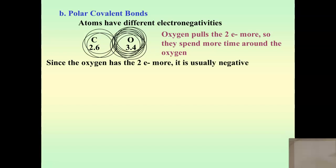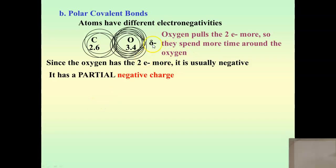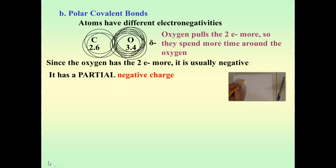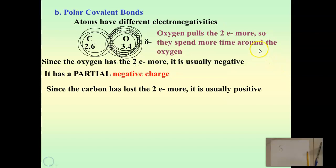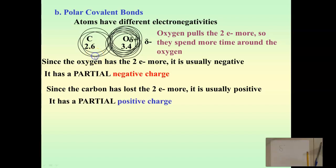Since the oxygen has the two electrons more often, it's usually negative. Every time the electrons spend time around the oxygen, it has an extra electron — it's negative — and the carbon is missing an electron, so it's positive. But since it doesn't have the electron all the time, we can't say it has a full negative charge — we say it has a partial negative charge. The symbol for partial is a lowercase delta (δ), so we say it's δ− for oxygen and δ+ for carbon.